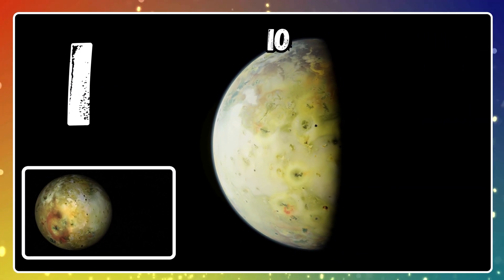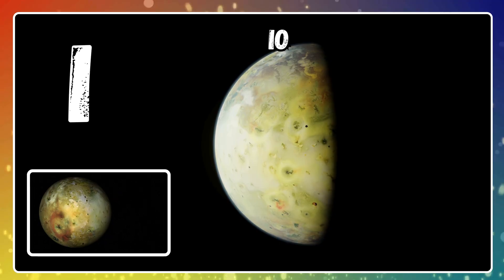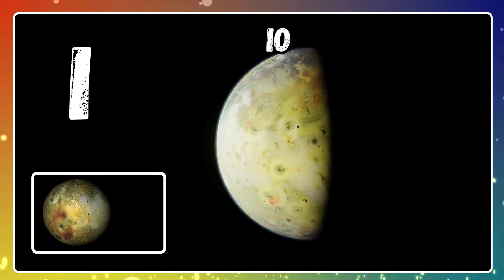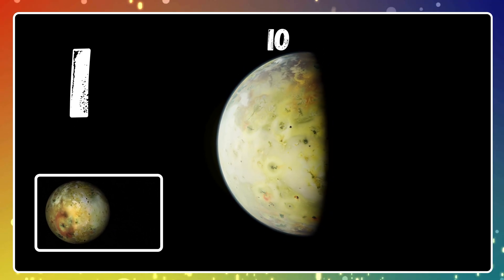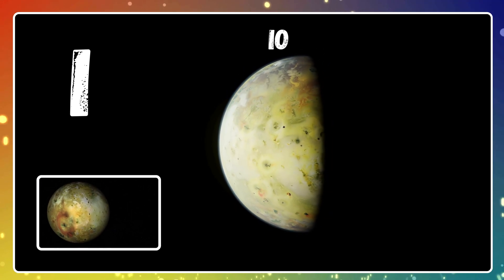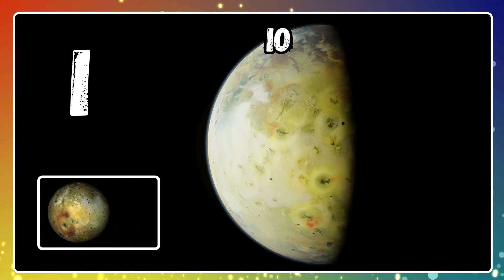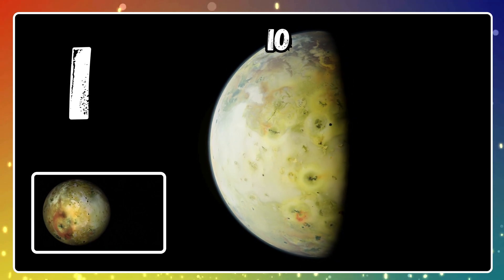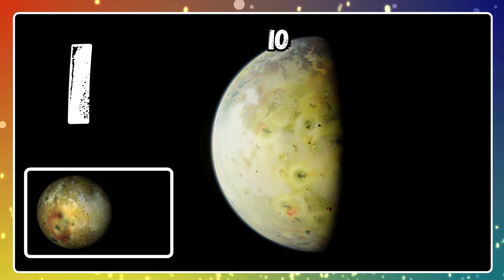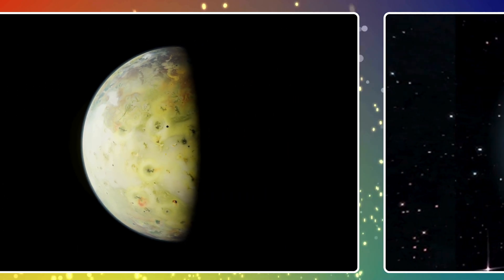I is for Io. Io is Jupiter's moon, covered with volcanoes.